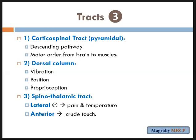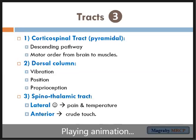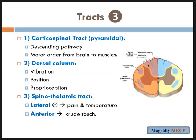Any lesion in the corticospinal tract can be classified as upper motor neuron lesion if it is above the anterior horn cell, and lower motor neuron lesion from the anterior horn cell downward. Looking at the spinal cord cross-section: the dorsal column is in the posterior part, the corticospinal tract is here, and the spinothalamic tract includes the lateral spinothalamic tract and the anterior spinothalamic tract.